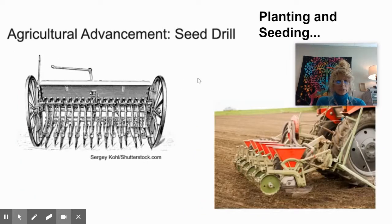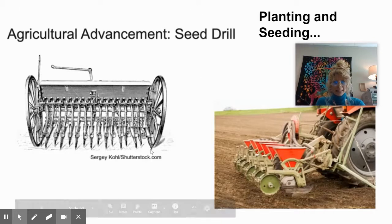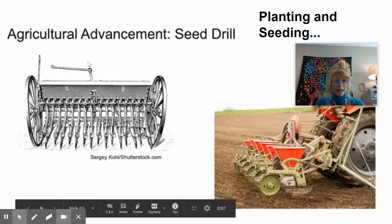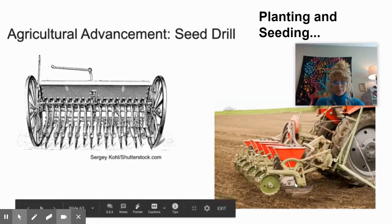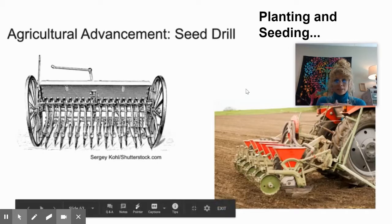The next one is the seed drill, which actually plants seeds — it digs a hole, plants the seed, and covers it up. This is what it looked like in the second agricultural revolution and this is what it looks like today. The effect is that it really speeds up the process of planting and covering each seed and also increases the yields produced.